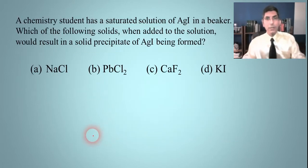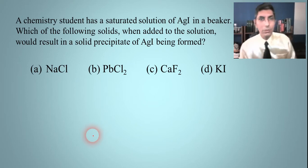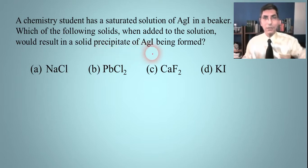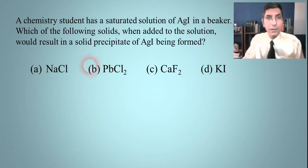Let's try an example here. Let's say that we have a chemistry student that has a saturated solution of silver iodide in a beaker. Which of the following solids, when added to the solution, is going to result in a solid precipitate of silver iodide being formed? Now before we go too much farther in this, it might be nice to write out the actual equation so we can see what's going on here.